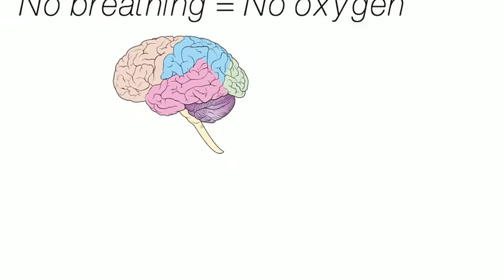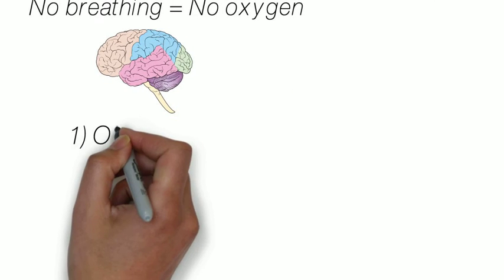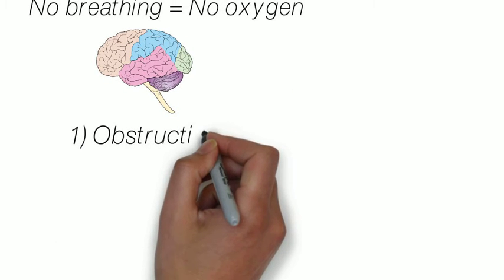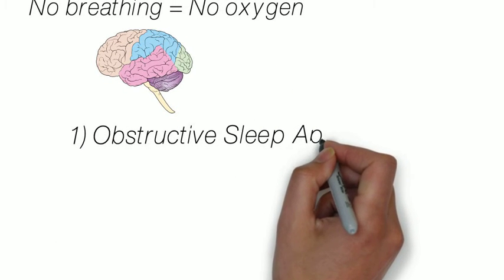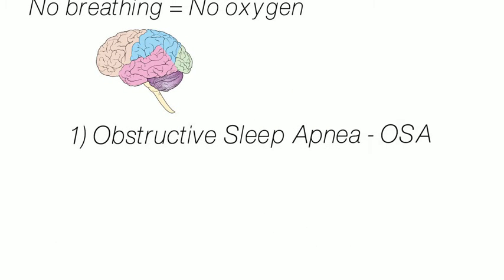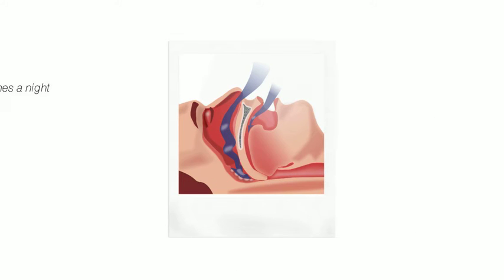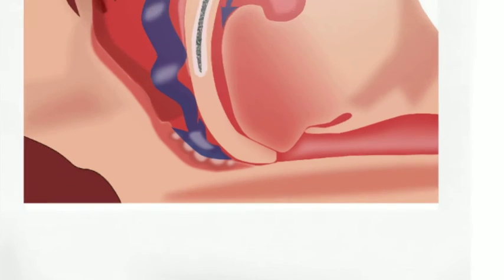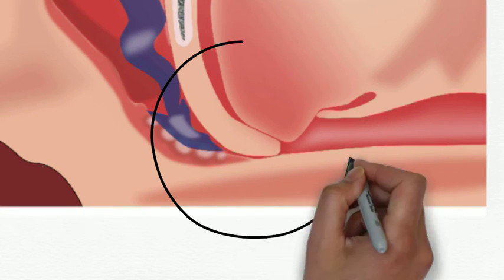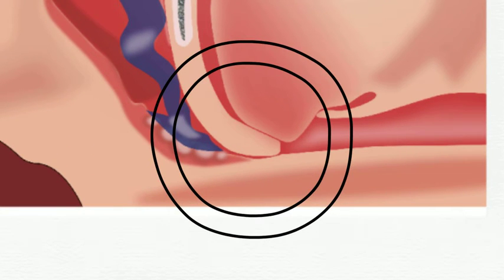There are three types of sleep apnea. The first is obstructive sleep apnea, or OSA. This is the most common and it is caused by a blockage of the airway, usually when the soft tissue in the back of the throat relaxes and collapses during sleep.